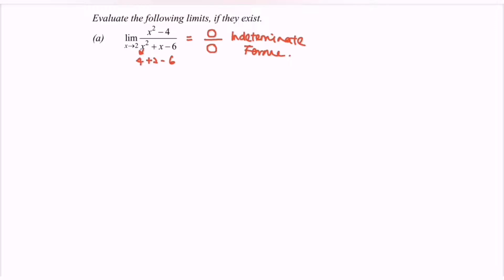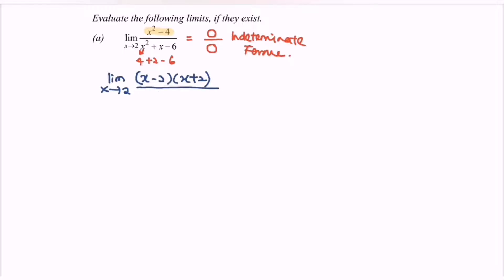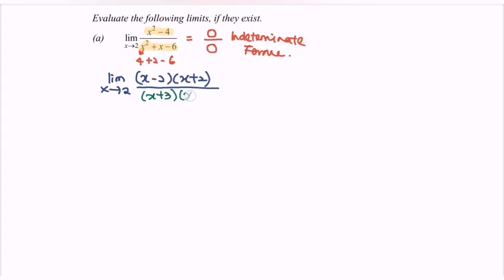Observing the numerator, we have x squared minus 4. After factorizing, we get the limit when x approaches 2 with (x minus 2)(x plus 2) in the numerator. For the denominator, x squared plus x minus 6 factorizes to (x plus 3)(x minus 2).